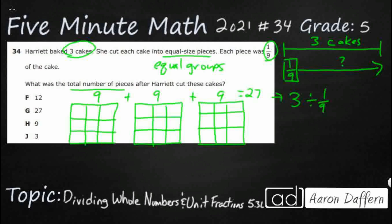Well, in order to figure that out, we need to understand reciprocals. Reciprocals are numbers that you multiply by another number to get it back to one. So let's say I've got the number two, and I want to multiply it to get it back to one. Two is already bigger than one, so the only way to get that back to one is to multiply it by a fraction — one-half. Any whole number turns into a fraction simply by putting it over one. Two times one is two, one times two is two, so two-halves equals one.